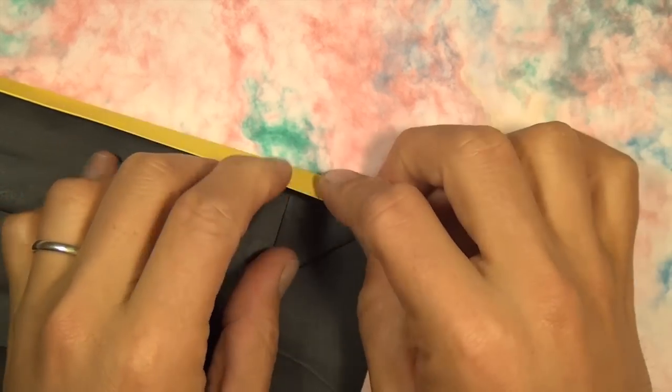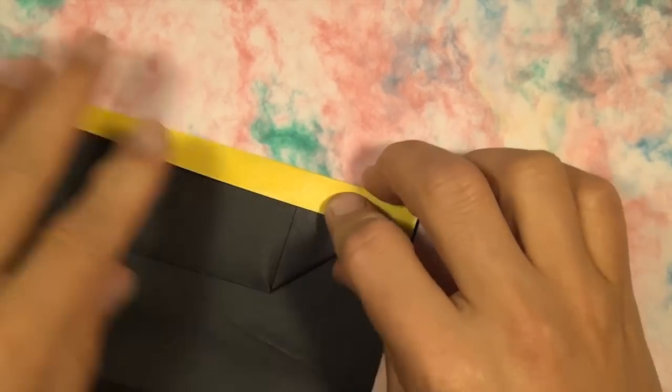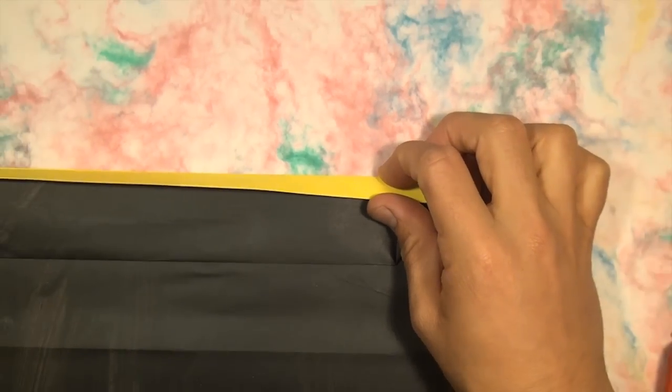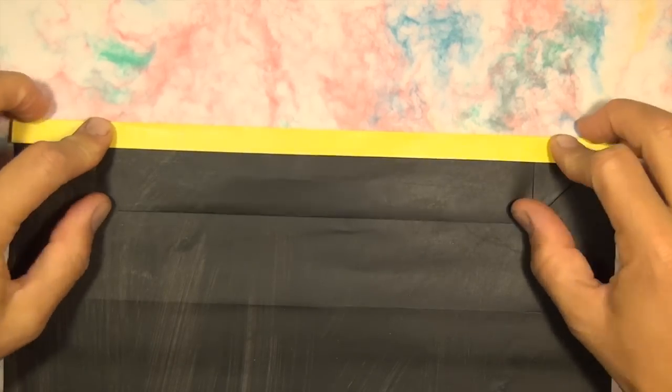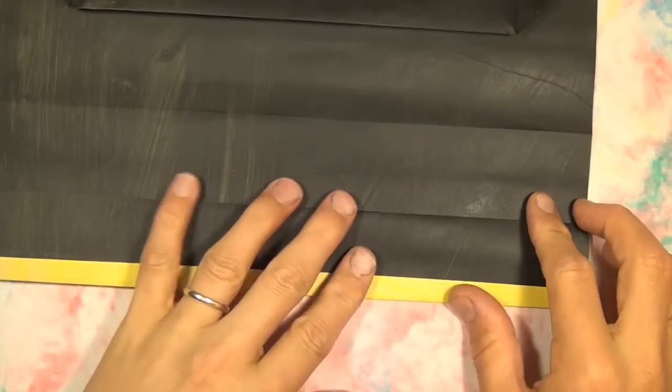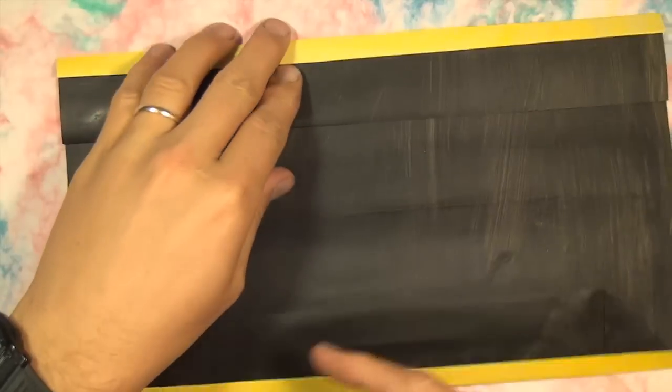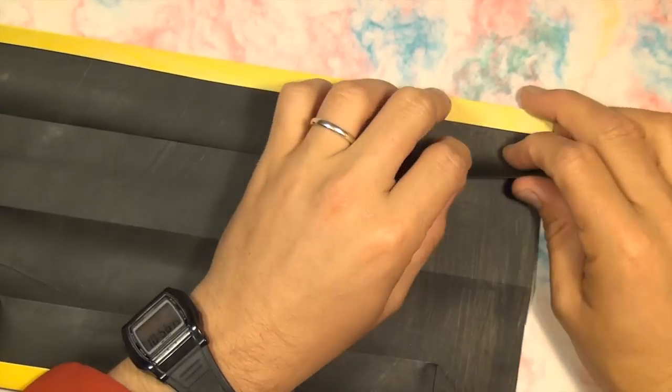And then underneath. Okay, so here we have the tucked in flap. Let's do the same thing on the bottom. Well, rotate it. Let's do the same thing on the top.